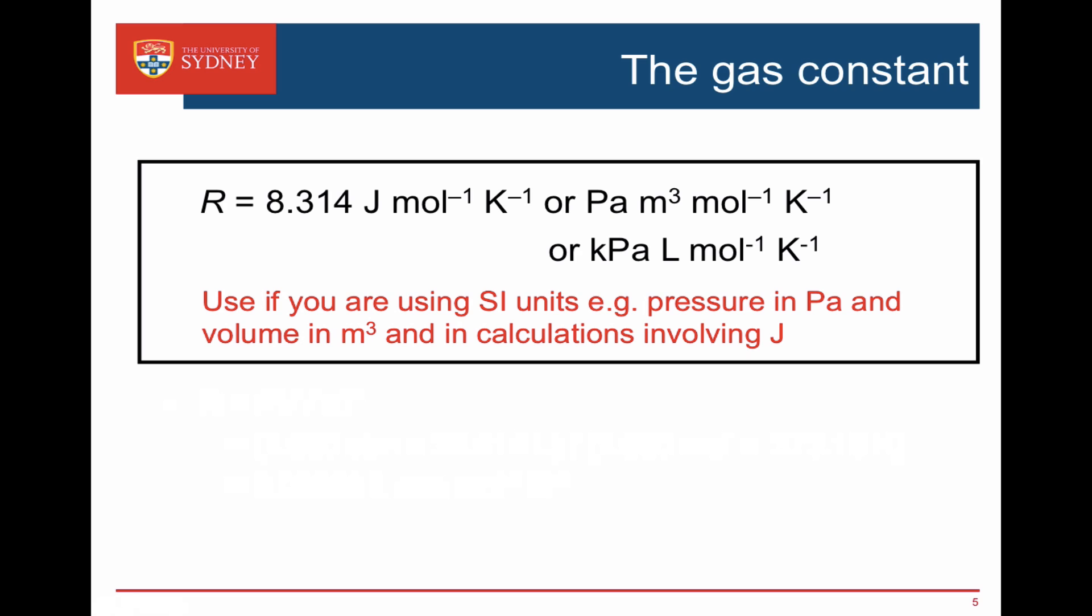So on your datasheet you will see two values given for R. If you're using SI units perhaps you're using pressure in pascals and volume in meters cubed, or you're doing calculations using R when you've got joules involved then you'll always pick 8.314 joules per mole per Kelvin knowing that's the same as 8.314 pascal meter cubed per mole per Kelvin or kilopascal liter per mole per Kelvin.